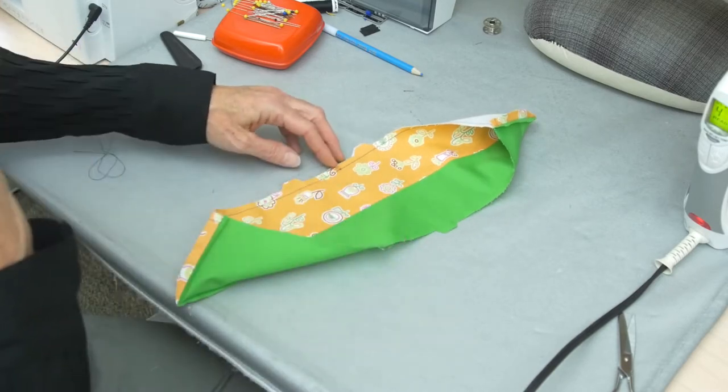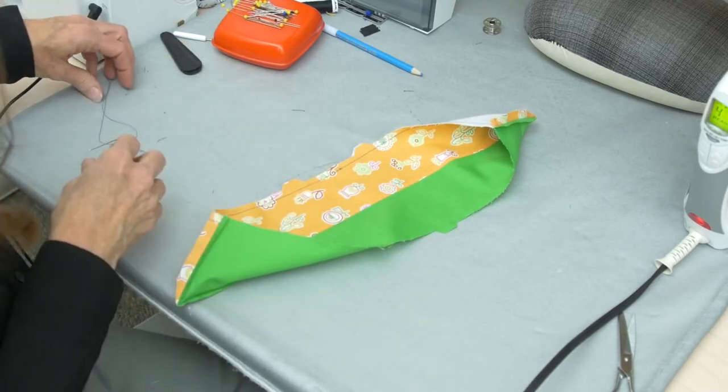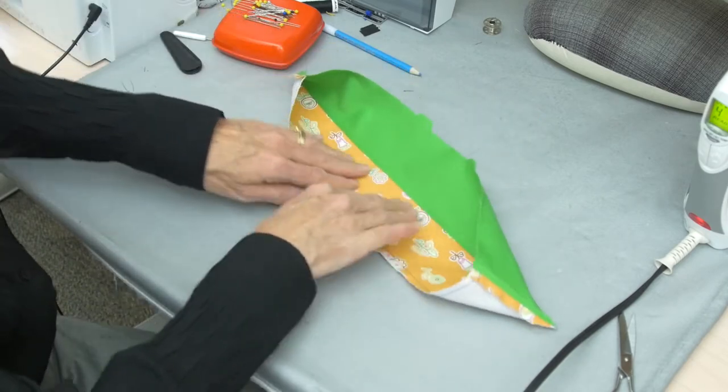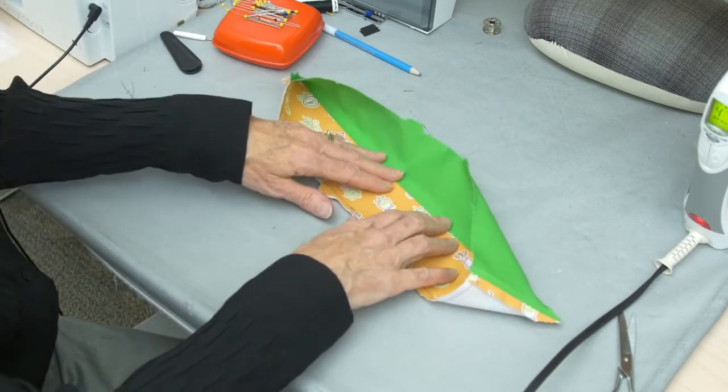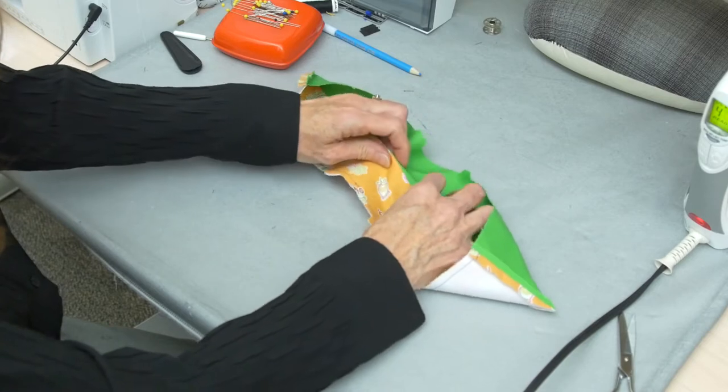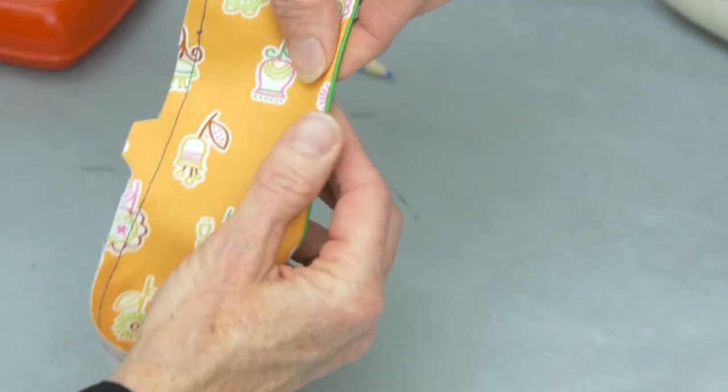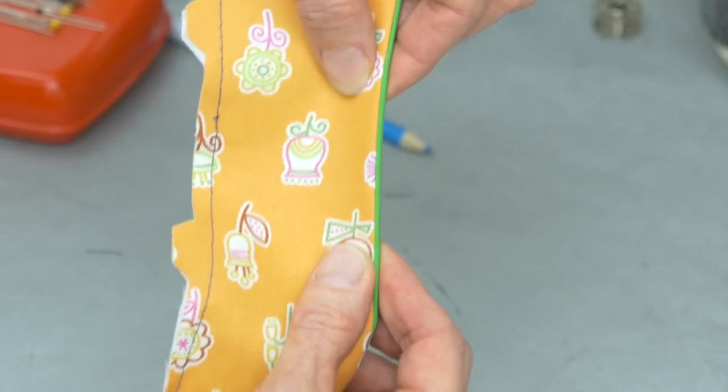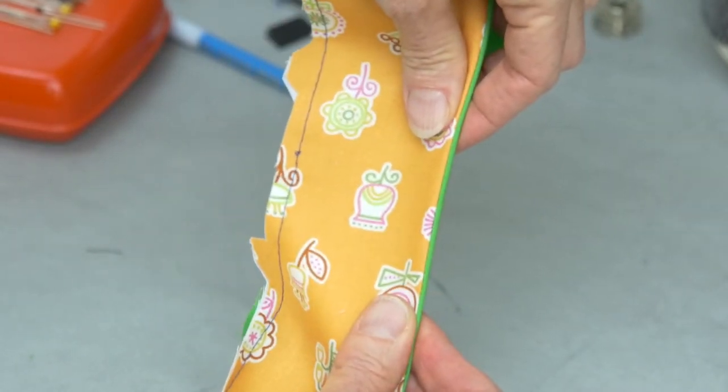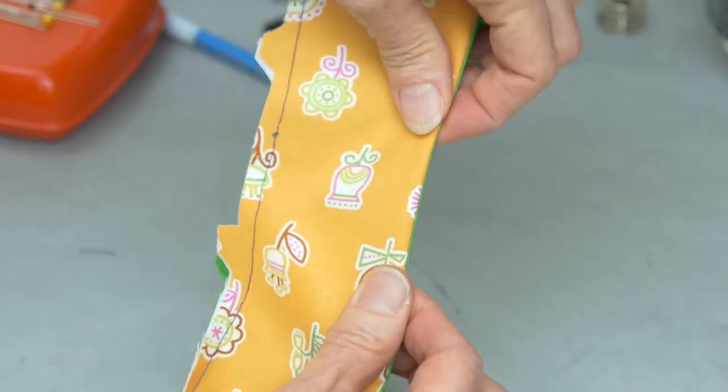When all is said and done and it's turned right side out, we don't want that under collar showing along the edge. This is where I've made a different color. It's very obvious here that it shows. We would like it to be slightly favored and underneath.